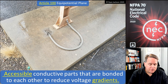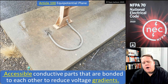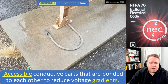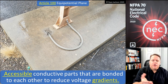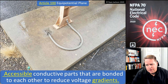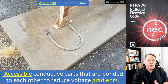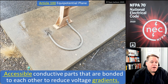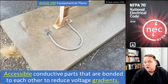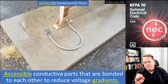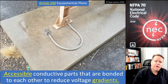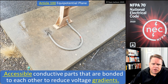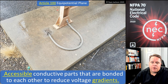The definition is: accessible conductive parts that are bonded to each other to reduce voltage gradients. The term 'accessible' was added, which may have been a mistake. Is concrete conductive? We don't consider concrete a conductor intentionally, but if you're standing barefoot on concrete contacting earth and you touch a live wire, you're going to get shocked — so it does conduct electricity. Looking at the picture here, this is medium voltage equipment where the support structure is bonded to a section of concrete.